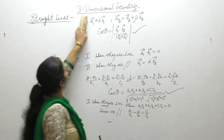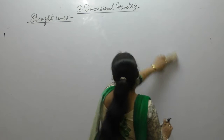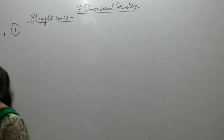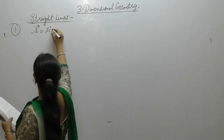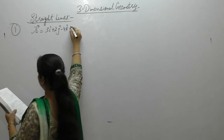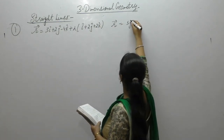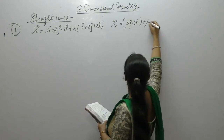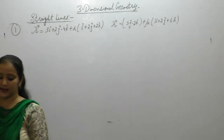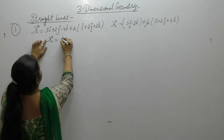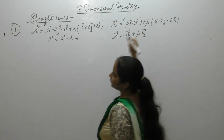Using these formulas we will solve the questions. Find the angle between the lines. The first line is in vector form: 3i + 2j − 4k + lambda(i + 2j + 2k). The second line is r vector equals 5j − 2k + mu(3i + 2j + 6k). These are the equations of lines in vector form, written as a1 + lambda·b1 and a2 + mu·b2.